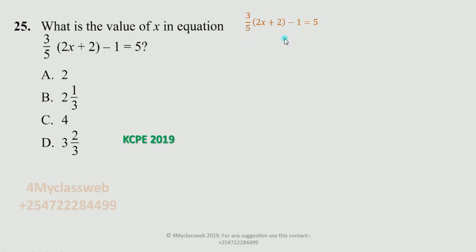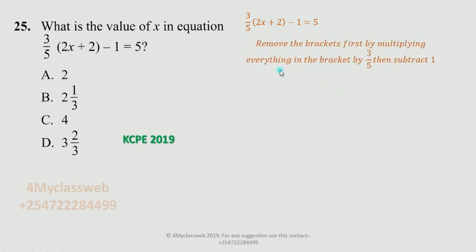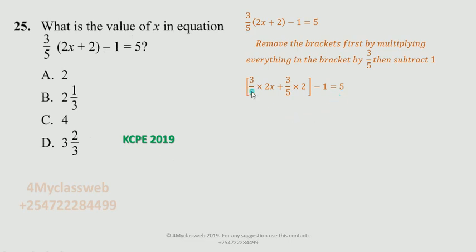There are several ways of solving this equation, but I'm only going to analyze one of them. I will start by removing the bracket first, by multiplying everything inside the bracket by 3 over 5, and then subtracting 1. What is inside the bracket is 2x plus 2, so I multiply 3 over 5 by 2x and then add 3 over 5 multiplied by 2.